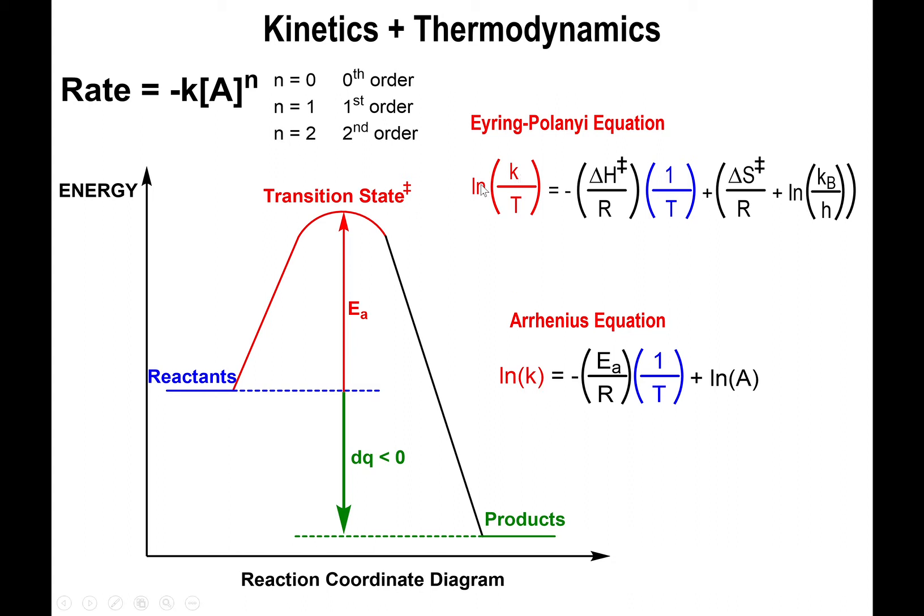Instead of plotting the ln of the rate constant like we do in the Arrhenius equation, we plot the ln of the rate constant over temperature in Kelvin. When you plot that versus the inverse temperature, the values you get are different.